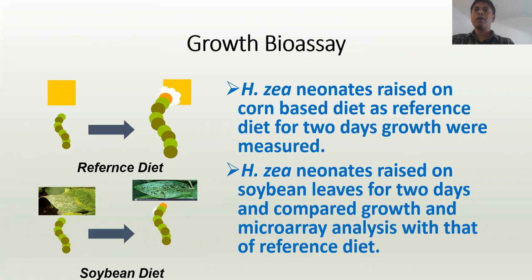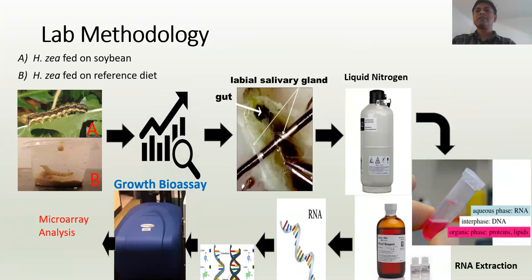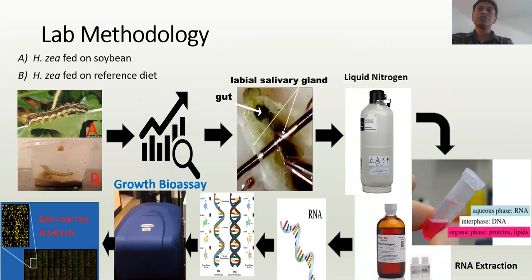First, we conducted a growth bioassay. We made two groups: one group of neonatal Helicoverpa zea caterpillars fed on an artificial diet, named the reference diet, and the other group fed on soybean leaves for 48 hours. After 48 hours, the caterpillars were flash frozen with liquid nitrogen, and my advisor Dr. Richard Musser dissected different tissues — midgut, gut, salivary glands, and the rest of the body. We made four replicates of these tissues.